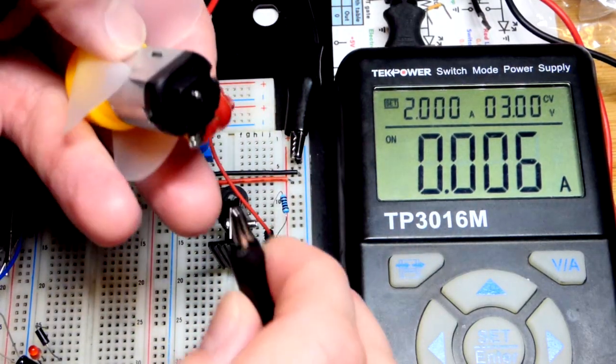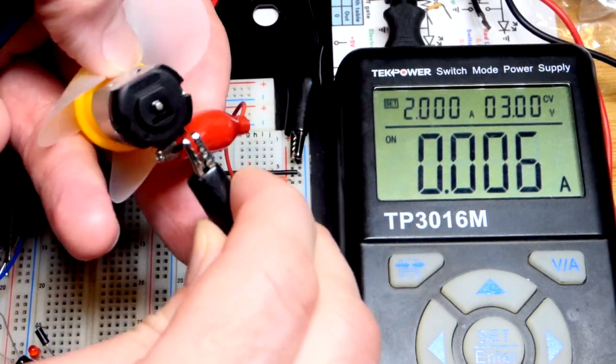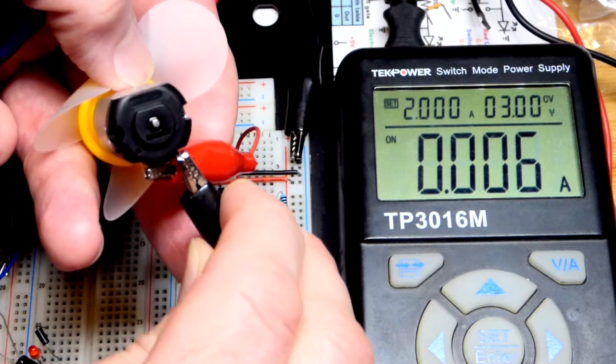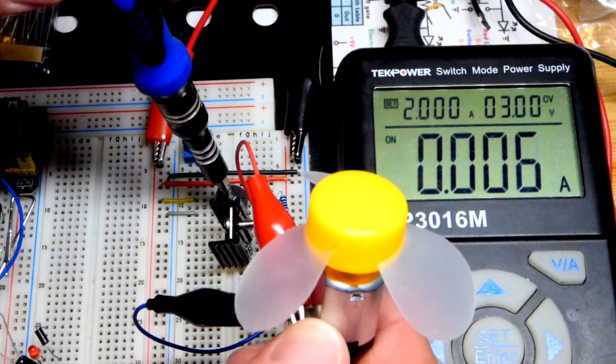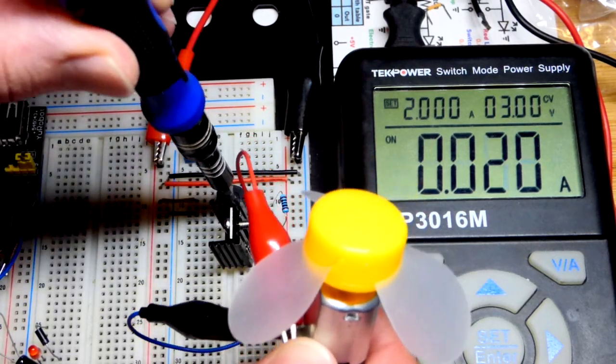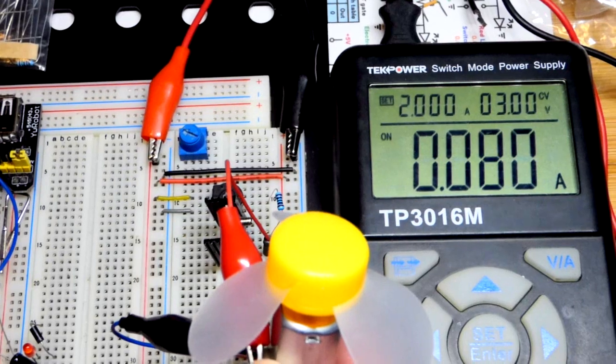Alligator clip fell off. This is just a temporary connection, so there you go. Let's do this before anything else falls off. Slowly turning up, you're going to see current going up on the power supply.